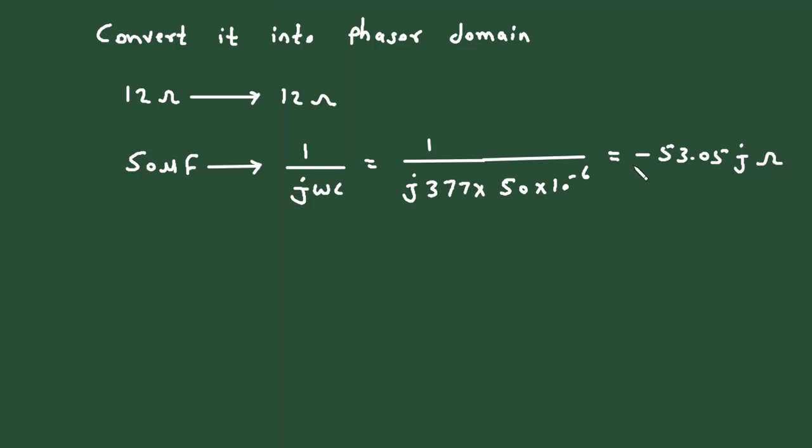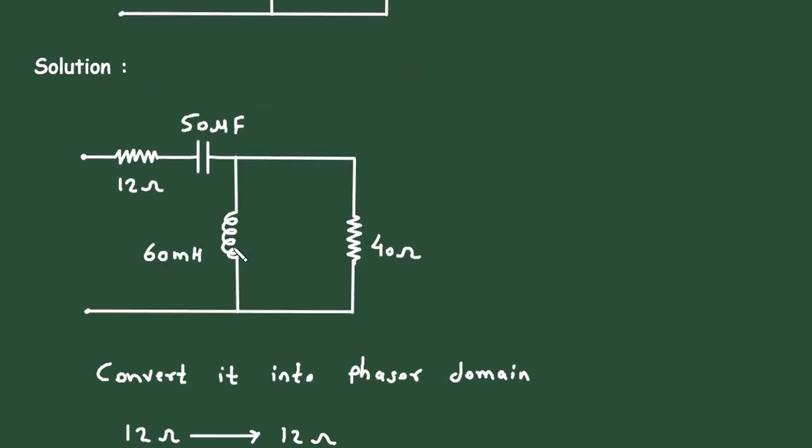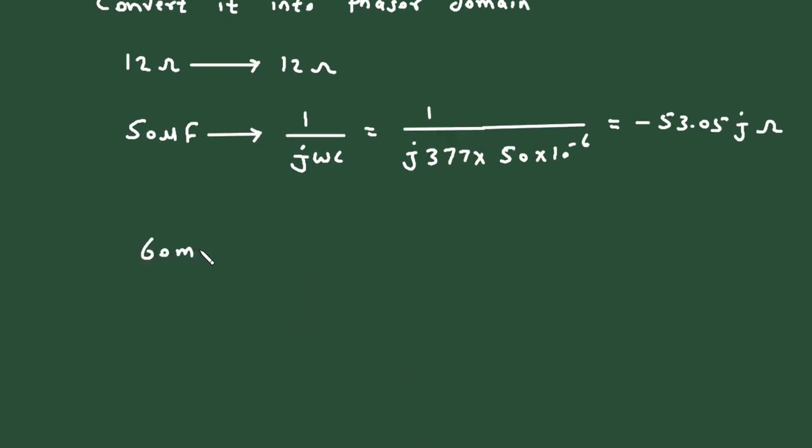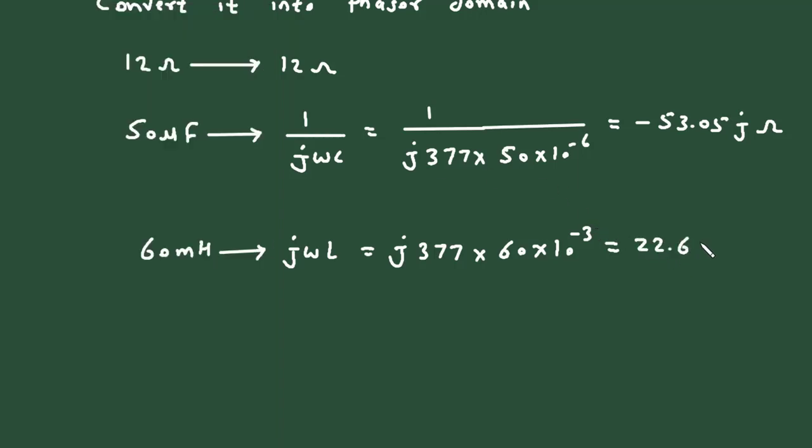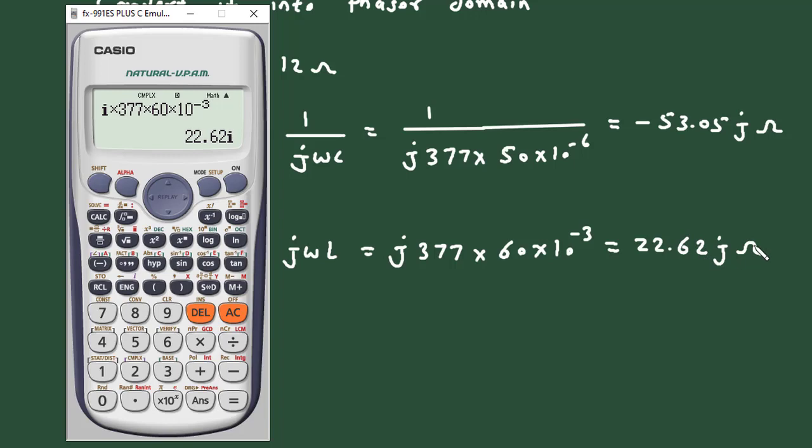And its unit will be ohm. Then next is 60 millihenry. So 60 millihenry, this will be j omega L. So j as it is, omega value is 377 radians per second. Then multiplied with inductance value is 60 into 10 to the power minus 3. Now it is equal to j into 377 multiplied with 60 into 10 to the power minus 3. So it is 22.62 j and again its unit will be ohm, 22.62 j ohm.